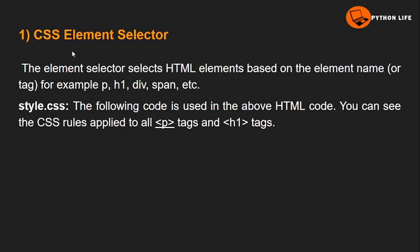The first one is the CSS element selector. With the element selector, we use the tag name directly to apply CSS. We select an element using its tag name — that is, we use the element name or tag name to select and apply CSS styles.